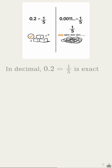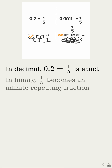1 over 5 in binary is like 1 over 3 in decimal — it turns into an infinite repeating string of digits. Like 0.333 forever, but now it's 0s and 1s instead of 3s? Exactly. Unless the denominator is a pure power of 2, the binary expansion repeats forever.